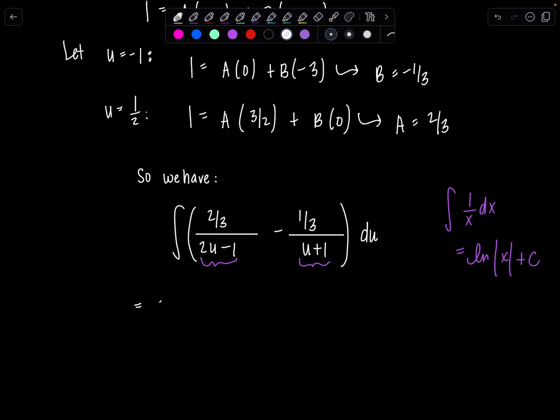So you keep that 2 thirds that's in the numerator. Then we're going to multiply by 1 half. And then I have natural log absolute value 2u minus 1. That's the anti-derivative of the first term.